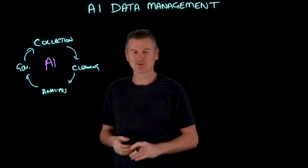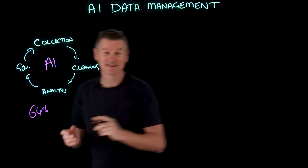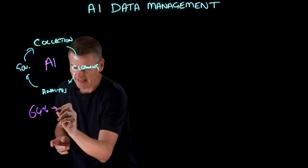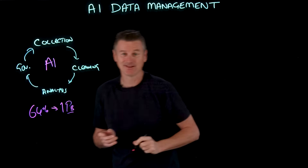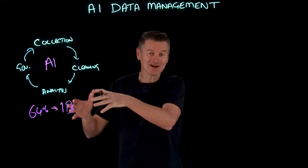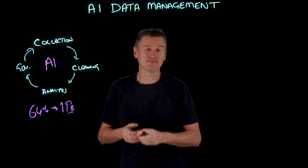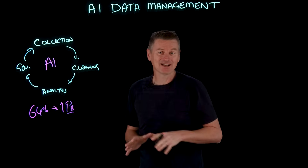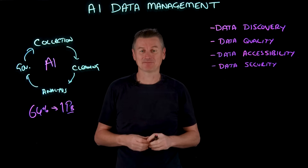In a recent information management report, 64% of organizations said that they manage at least one petabyte of data, and that data isn't ready in one place — it's spread out across many systems and formats. So let's take a look at four ways that AI data management can help.